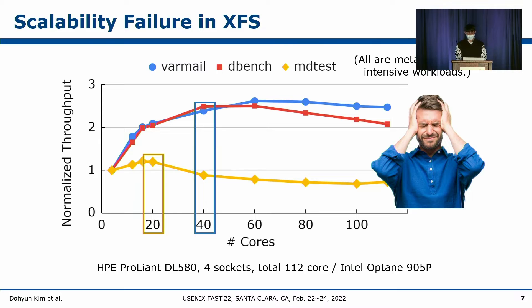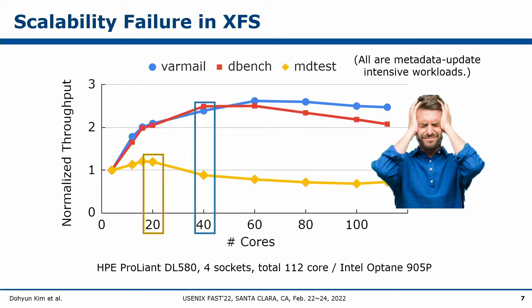This graph shows the scalability of XFS. We use a 112-core machine and Intel Optane SSD, with throughputs normalized to the throughput at four cores. We ran three metadata-update-intensive workloads; the x-axis is the number of cores and y-axis is normalized throughput. In BarMail and DBench, XFS fails to scale beyond 40 cores. In MDTest, after 20 cores, performance decreases below the baseline.